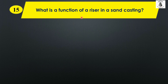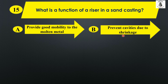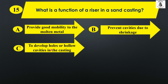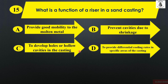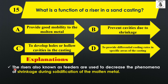What is the function of a riser in sand casting? Option A: provide good mobility to the molten metal, Option B: prevent cavities due to shrinkage, Option C: to develop holes or hollow cavities in the castings, and Option D: to provide differential cooling rates in specific areas. Risers, also known as feeders, are used to decrease the phenomenon of shrinkage during the solidification of the molten metal. So the right answer is Option B, to prevent cavities due to shrinkage.